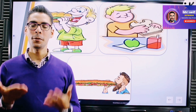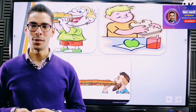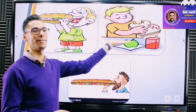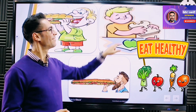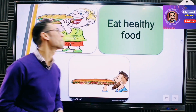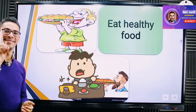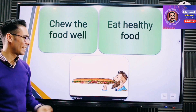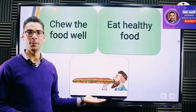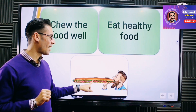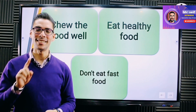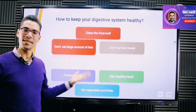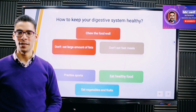Now I need you to give me some advice to keep the digestive system healthy. From the pictures: eat healthy food, chew your food well, and avoid fast food — do not eat junk food because it is harmful for your body. Here is a summary of the most important advice you can use to keep your digestive system and your body healthy.